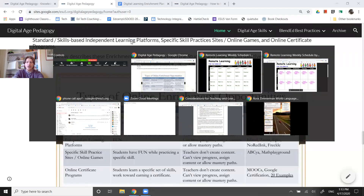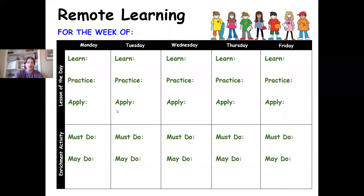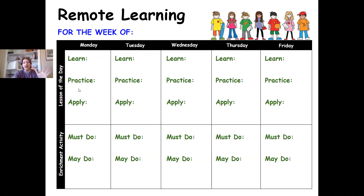When we think about what kids can do in an hour, an hour and a half, or two hours — in two hours we might be able to get through two educational opportunities: two lessons where students are engaged in some input, some instruction, some practice, and then get to that apply phase of creating something. But if we're thinking in an hour and a half, it would be hard to get kids all the way through a true educational opportunity.